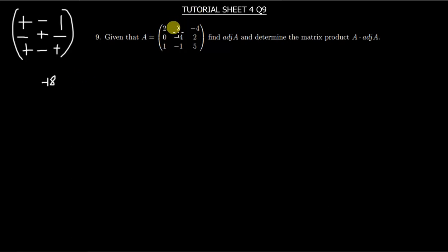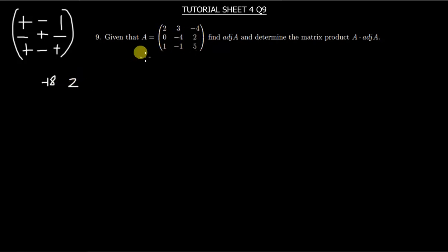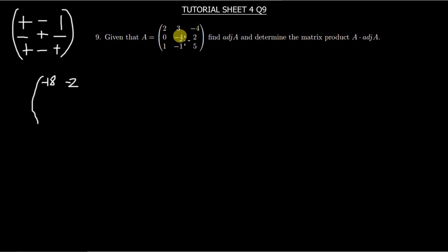Moving on to the next entry: you close that row and column, and the remaining numbers are the ones you multiply for the minor. Zero times 5 is 0, and 1 times 2 is 2, so it's 0 minus 2, giving negative 2. For the minor of negative 4: zero times negative 1 is 0, minus 1 times negative 4 which is negative 4, so 0 minus negative 4 gives positive 4.